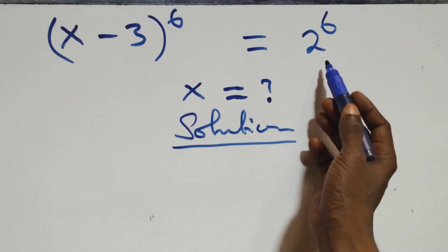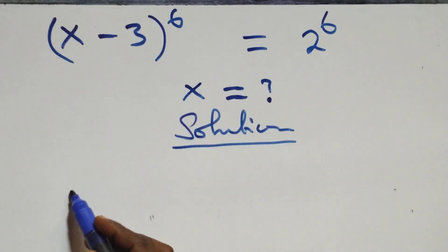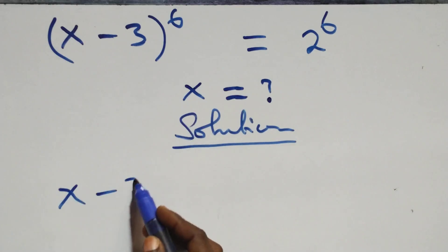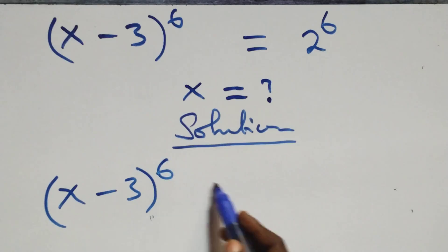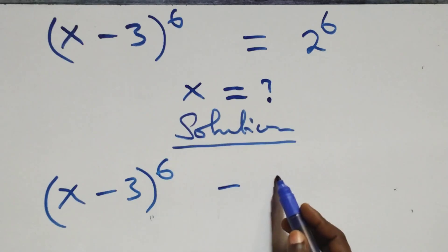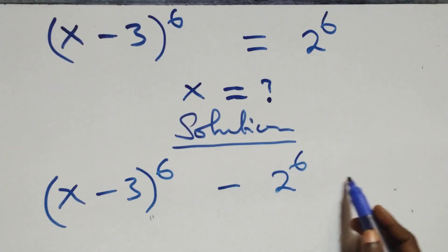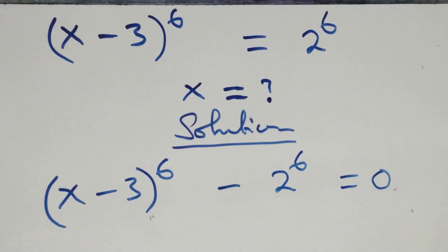Take 2 raised to power 6 to the left hand side. At this we have x minus 3, 4 raised to power 6, minus 2 raised to power 6, then equals to 0 here.